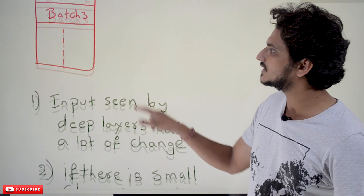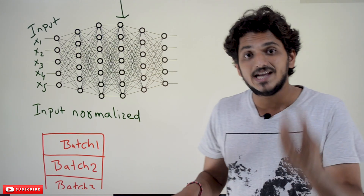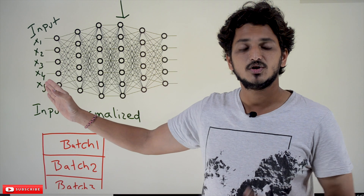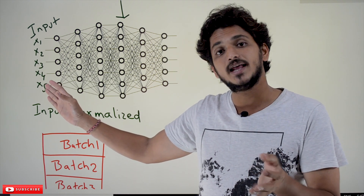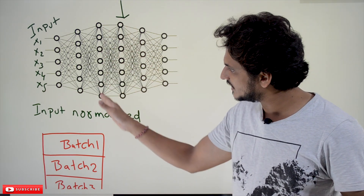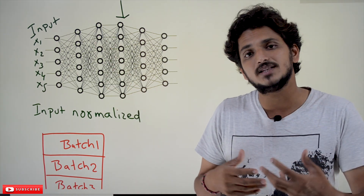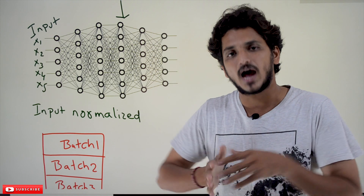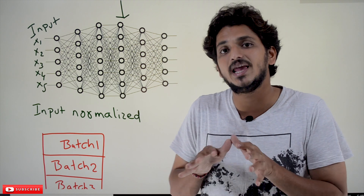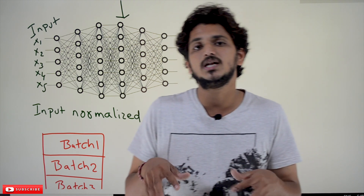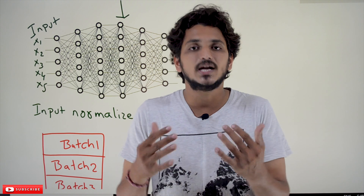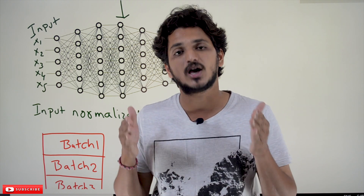So the idea of batch normalization is: why normalize the data only at the input layer? Normalize each batch at each layer. If you normalize the data at each layer, each layer will see the data from the same distribution. If the input is from the same distribution at each layer, it is very easy to identify the patterns and update our weights easily, so the model will be trained easily — meaning convergence is fast.